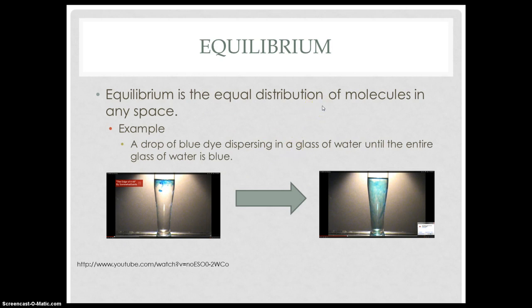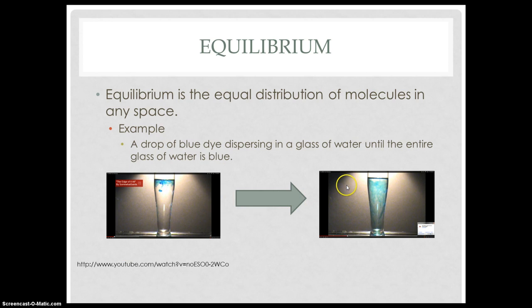Equilibrium is the equal distribution of molecules in any space. For example, as you can see in the pictures below, a drop of blue dye is dispersed in a glass of water — added to the glass of water, and as you can see, it just starts out at the top. But as time elapses, the blue dye disperses throughout the entire glass of water, and it will continue doing so until it reaches equilibrium.